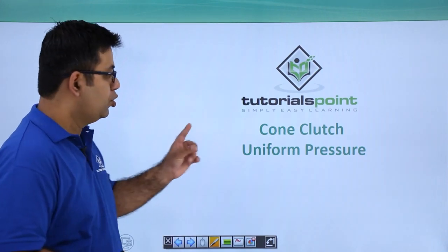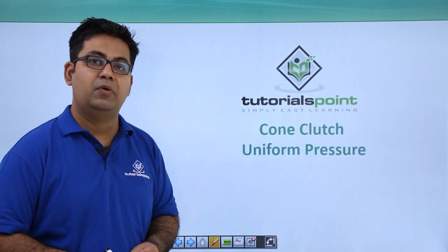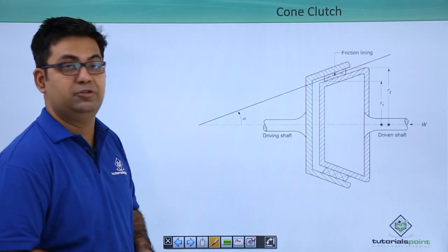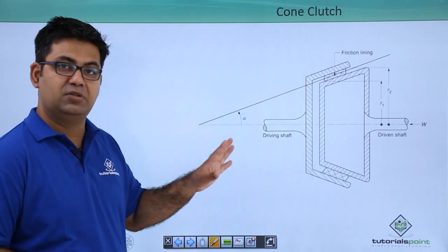Now let's talk about the cone clutch. The first case we will discuss is uniform pressure. First of all, let's look at the cone clutch - this is how a cone clutch looks like.